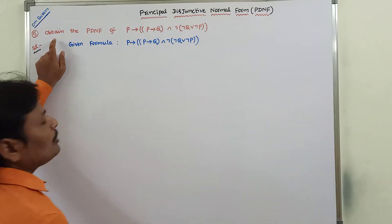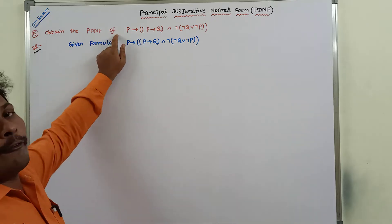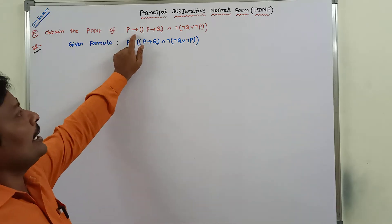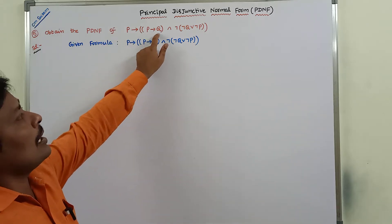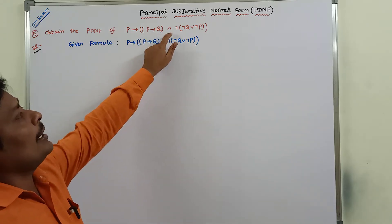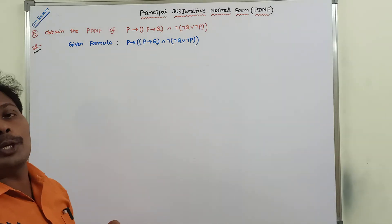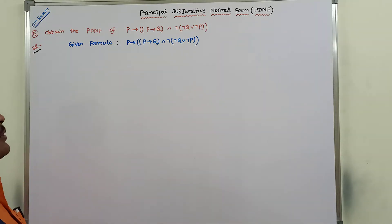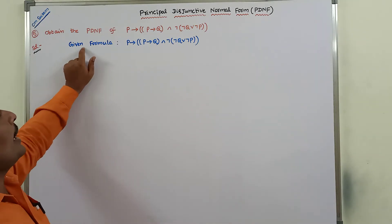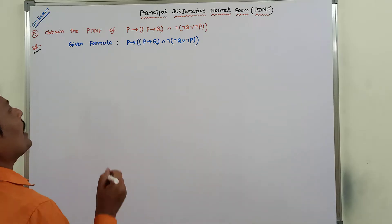Obtain the PDNF of P conditional (P conditional Q) and negation of (negation Q or negation P). The given formula is this one.